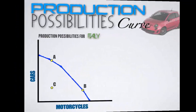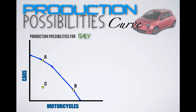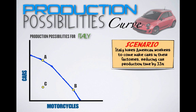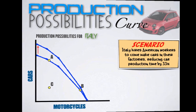For Italy: Italy hires American workers to make cars in their factories, reducing car production time by 33%. These American workers only work in factories making cars, not motorcycles. Italy's ability to produce motorcycles will not change, but its ability to produce cars will increase, so the PPC shifts outward towards cars only — an increase in its capacity to produce automobiles.